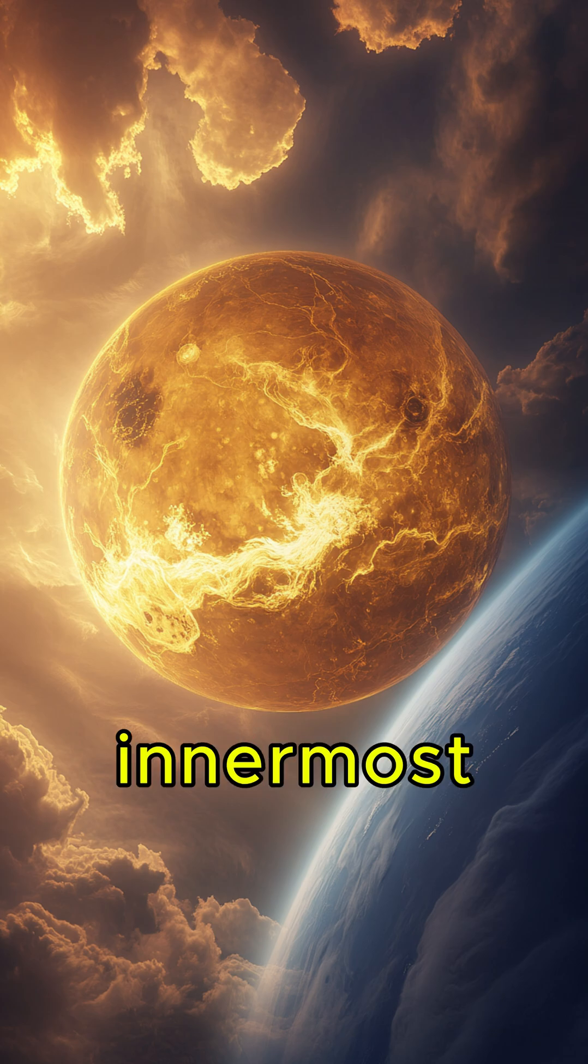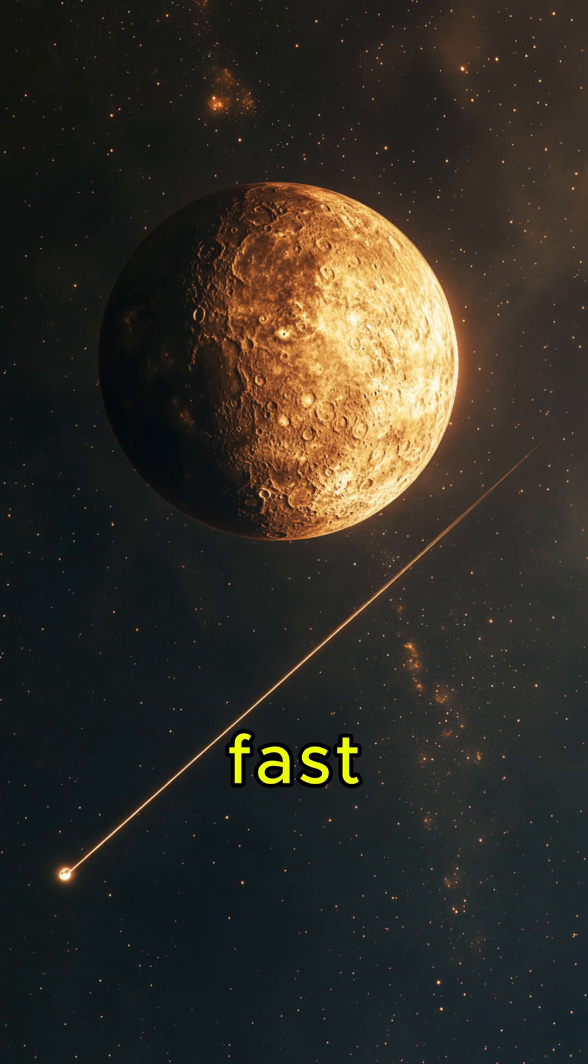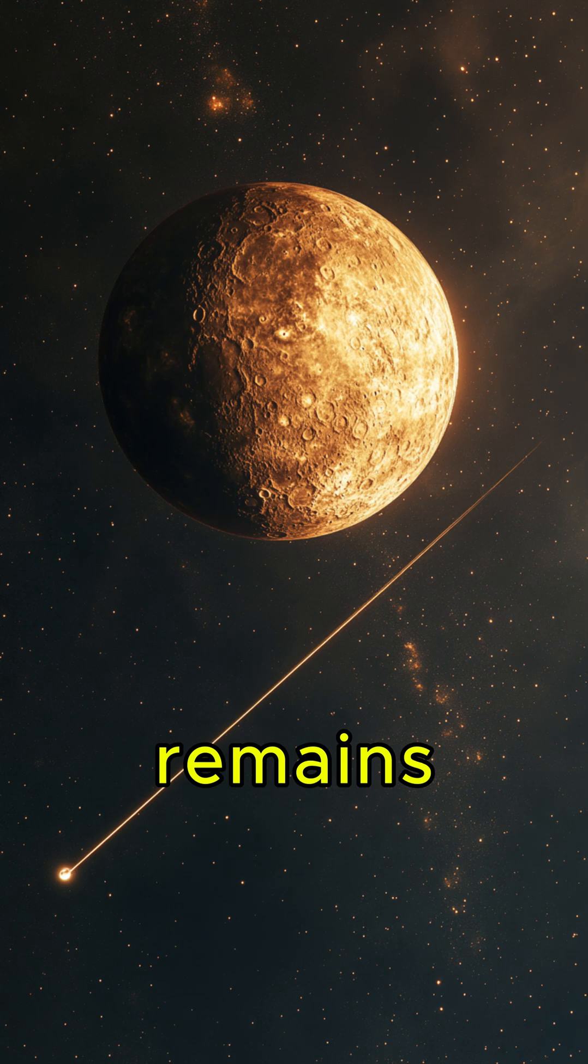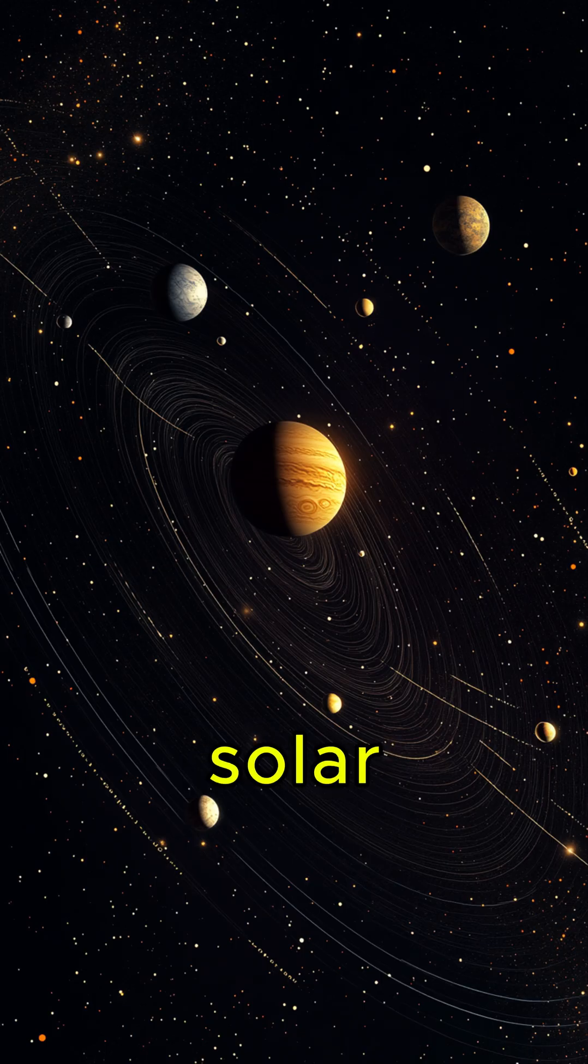But Mercury, the innermost planet, moves so fast that on average, it remains the closest planet to any other planet in the solar system.